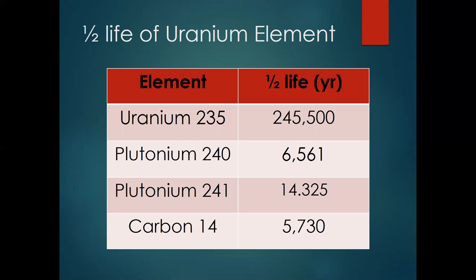Each element has its own unique half-life. As you can see here, uranium-235's half-life is pretty long — it's almost 250,000 years. This is one of the big problems: when you have uranium, it takes a really long time for it to become non-radioactive. Half-life can also be measured in mass, so let's take a look at a couple of math problems.